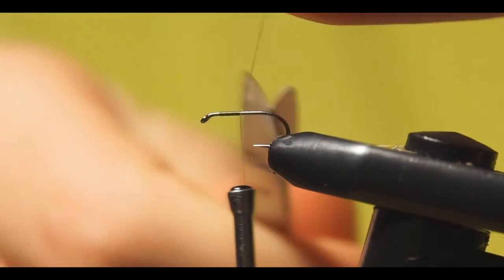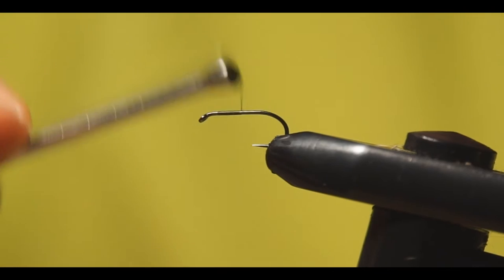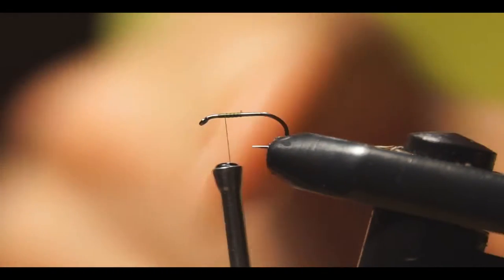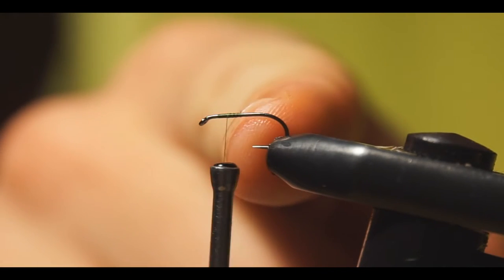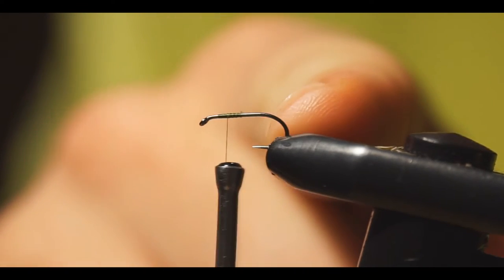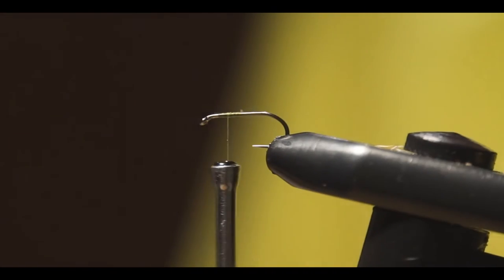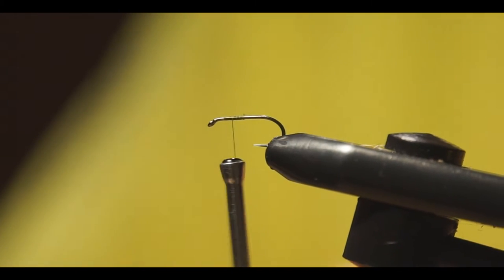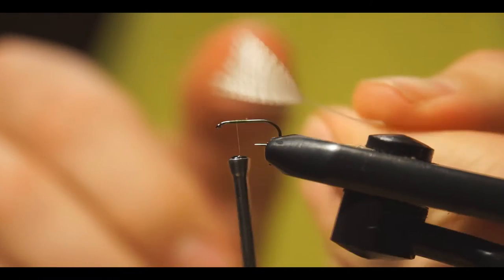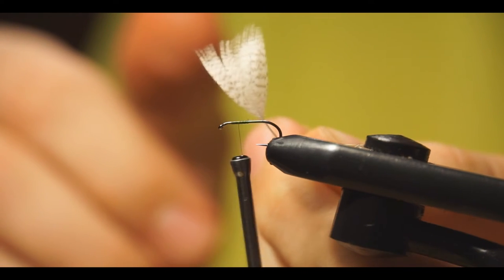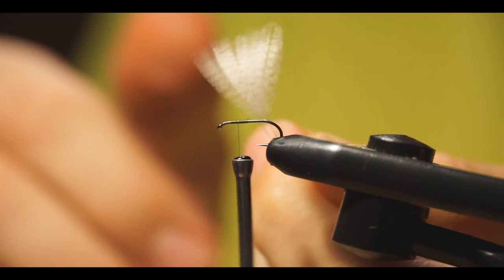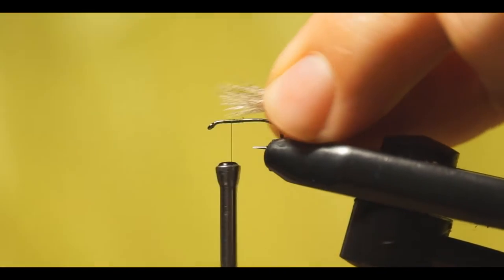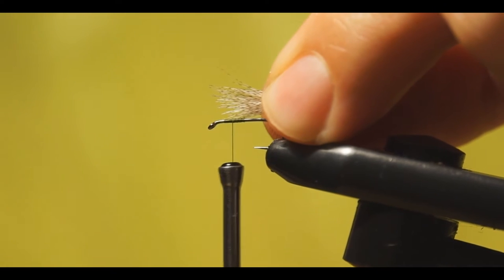The axis jump a little bit further, now we'll be here about one third, two thirds, three thirds of the hook shank. At the first third we'll tie in the wings which will be of mallard feather. I prepared it already here like this and the wing should be about the length of the hook shank.